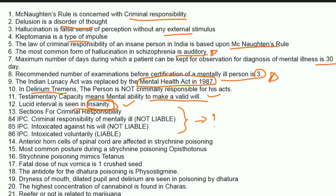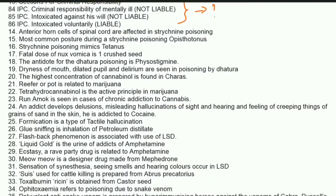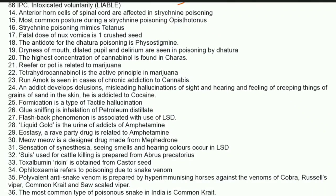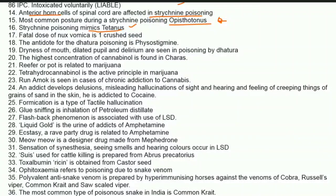Anterior horn cells of the spinal cord are affected in strychnine poisoning. The most common posture during strychnine poisoning is opisthotonus. Strychnine poisoning mimics tetanus. So three key points: anterior horn cells are affected, the most common posture is opisthotonus, and it mimics tetanus.